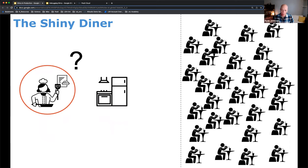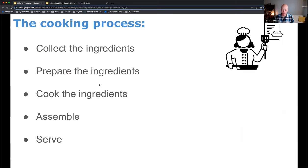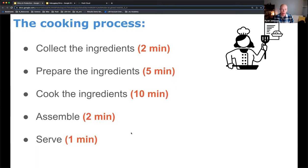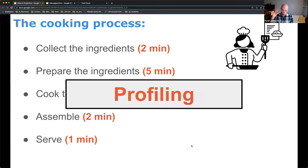Switching back to the manager of the Shiny Diner — we can think about how to improve the chef's operations and make them more efficient in the kitchen. You take a chair and watch your chef in action. A meal comes in and the chef goes through these steps: collect the ingredients, prepare them, cook them, assemble the meal, and serve it. You have a stopwatch and time how long each step takes. Maybe collecting ingredients takes two minutes, and cooking takes the most — about 15 minutes.